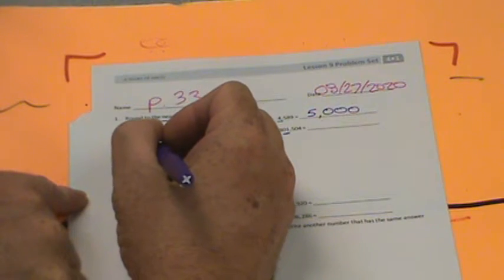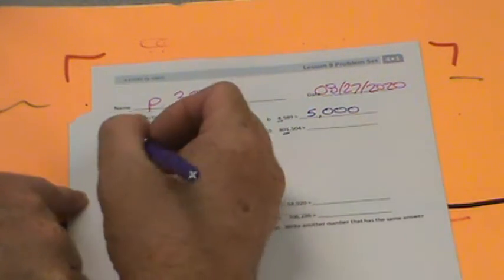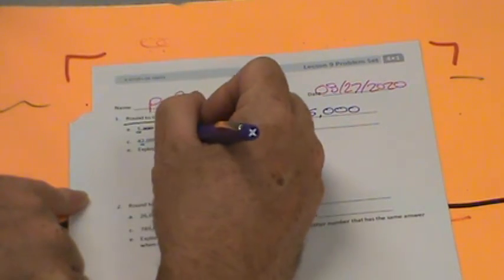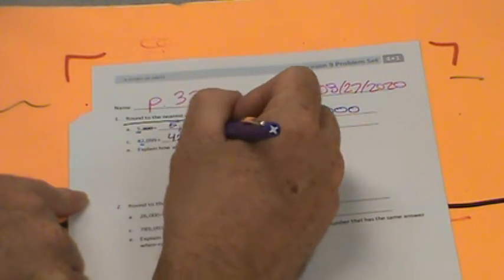Here we have 42,099. Well, 99 is much less than 500, so this, of course, would be rounded to 42,000.